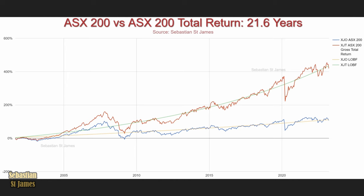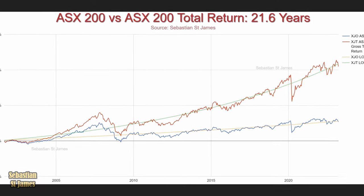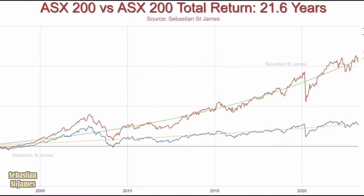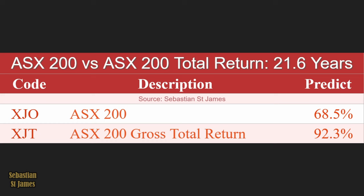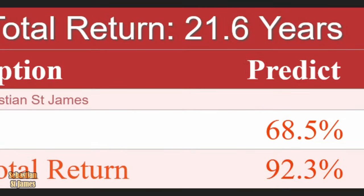Here is 21.6 years, which is all our data, so this is a better story because it's longer. Without dividends, the ASX200 has a predictability of 68.5%, which is not very good. Add in the dividends: 92.3%. Dividends might go up and down, but they're clearly more stable than stock prices.